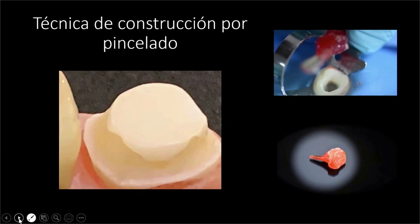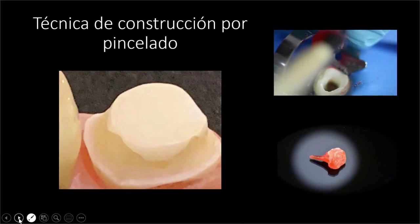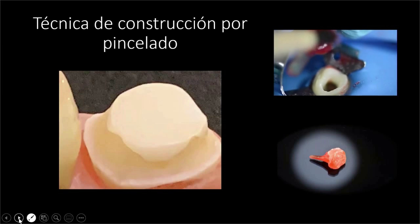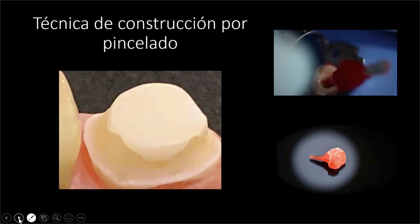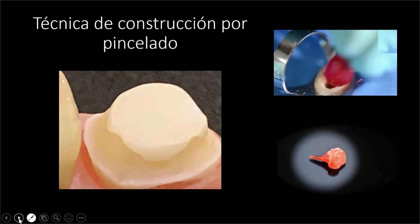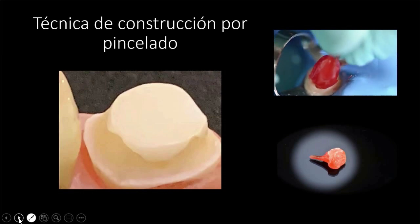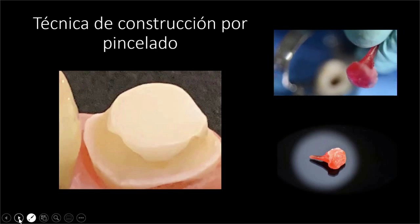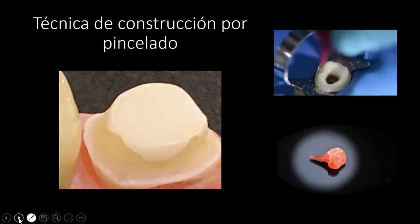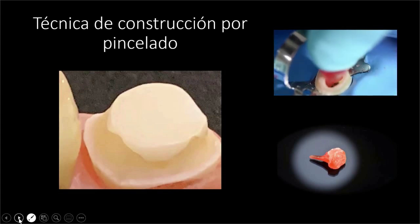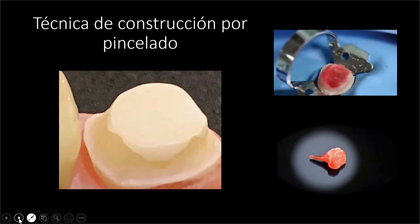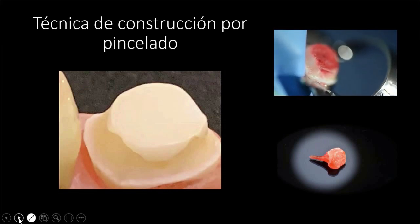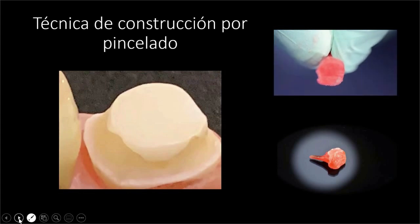Arriba podemos ver cómo estamos reconstruyendo solo la parte del muñón. ¿Por qué? Porque toda la parte interna ya la tenemos dominada, ya polimerizó. Esa es una de las ventajas de Pattern Resin: como tú hiciste primero el ajuste de lo que está infrarradicular, eso ya polimerizó, ya tuvo su reacción exotérmica; no se va a sumar al resto. Cada porción polimeriza y tiene su reacción exotérmica por separado. Y aquí podemos ver cómo ya está nuestro poste tallado. Este material tiene la cosa grandiosa de que lo puedo tallar hasta que quede la forma exacta que necesito. Si tengo algún excedente, lo puedo recortar y dejarlo perfectamente ajustado.